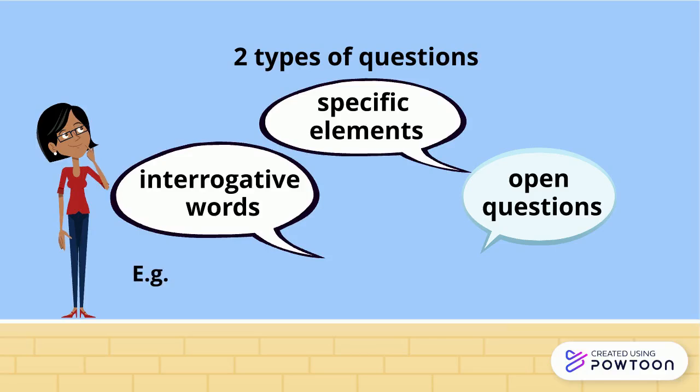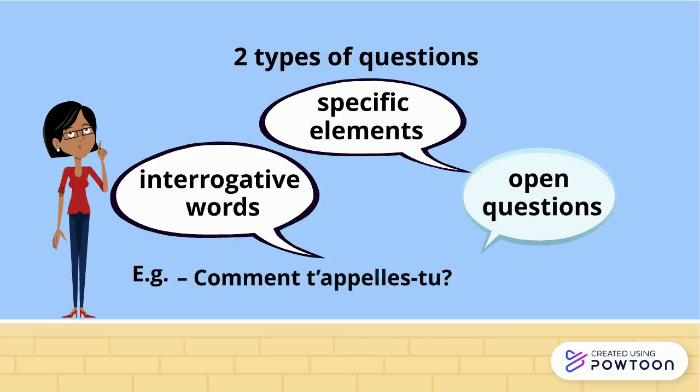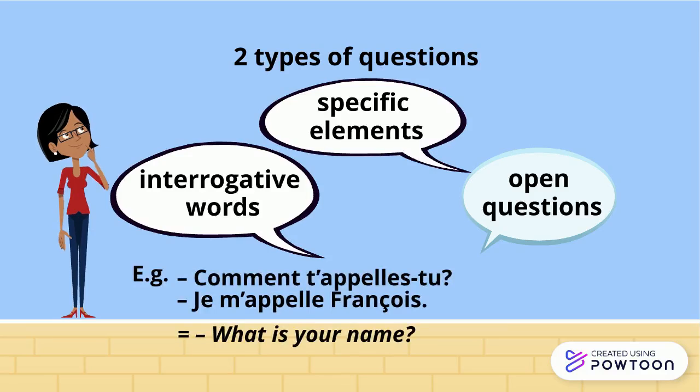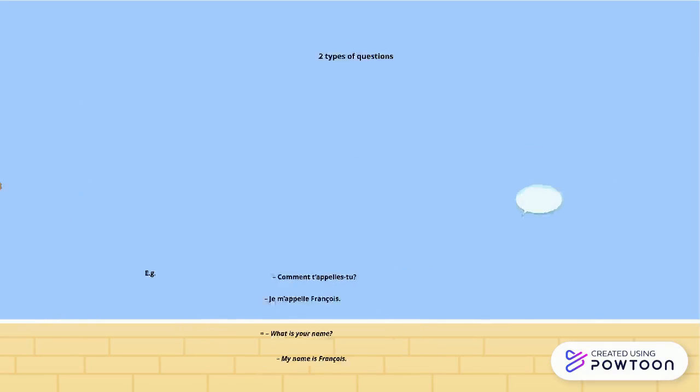Open questions relate to specific elements in the sentence and they use interrogative words. For instance: "Comment t'appelles-tu?" — Je m'appelle François. What is your name? My name is François.